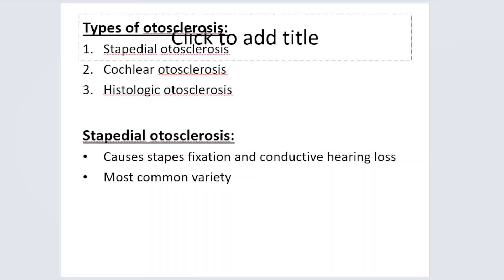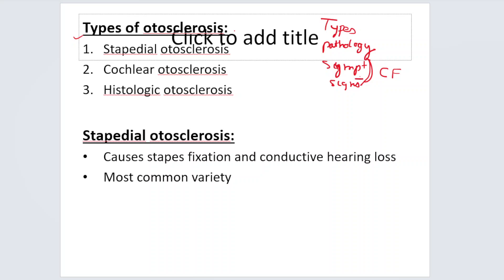We are going to discuss the types of otosclerosis, the pathology of otosclerosis, and the signs and symptoms of otosclerosis. Both symptoms and signs together are grouped into what is called clinical features.